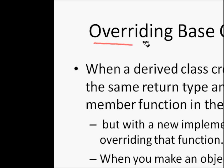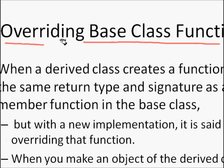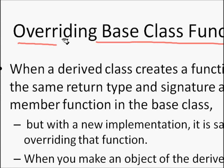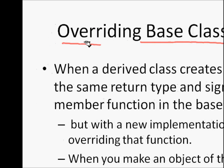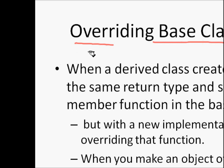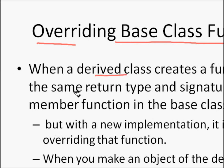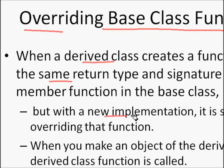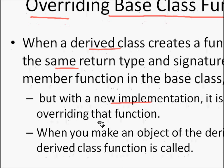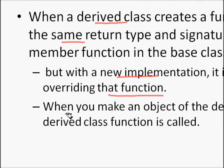In this lecture we will learn about overriding base class functions, which is one very important feature of C++. Even when you are deriving from a base class, if you want some function to perform something better or something different from your base class, you can override that base class function. When a derived class creates a function with the same return type and signature as the member function in the base class but with a new implementation, it is said to be overriding the base class function.